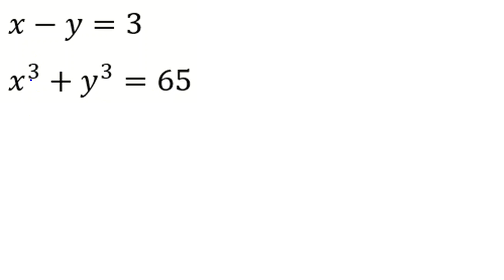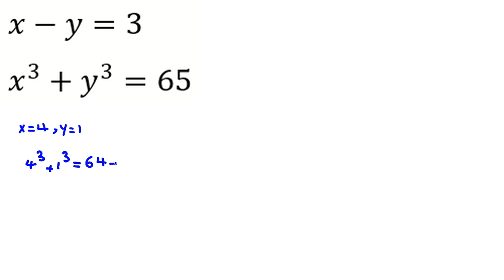We see the degree is 3. First, let's try to find an answer. If y is 0, x is 3 — that doesn't work. If y is 1, x equals 4. The first equation is correct. For the second: 4 cubed plus 1 cubed — 4 cubed is 64, 1 cubed is 1 — equals 65. It works, so this is one answer.